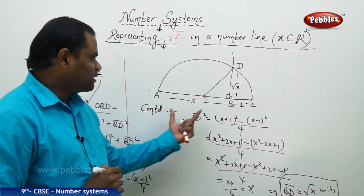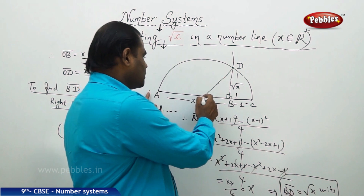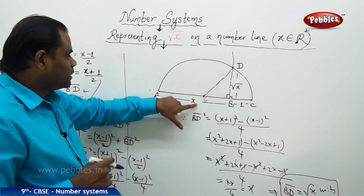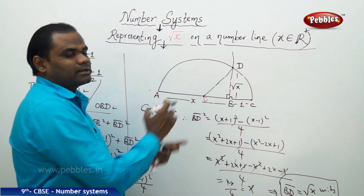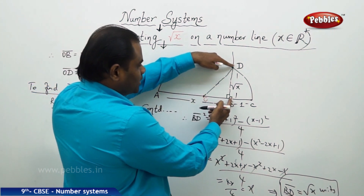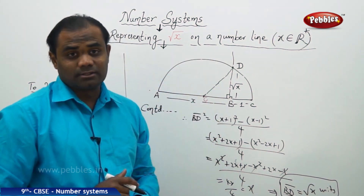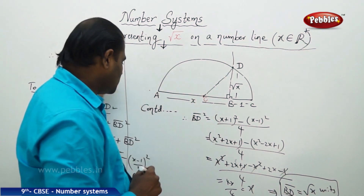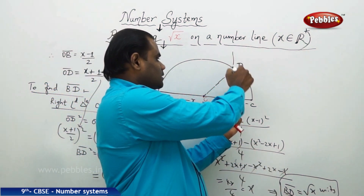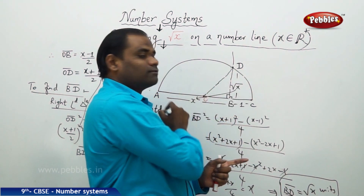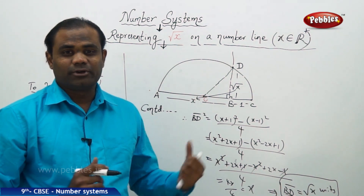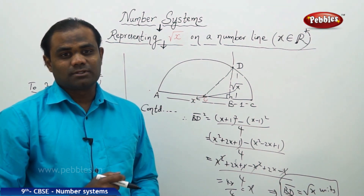So the length BD = √x units is how we construct the square root of any real number using this geometrical process. Using any real number x as the length AB, we can construct the distance BD which equals √x — the derived formula indirectly gives the square root of that number geometrically.